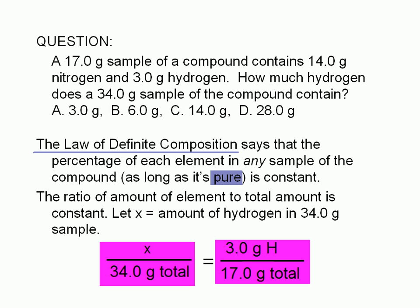To solve for X, we simply multiply both sides by 34.0-grams and get X equals 6.0-grams of hydrogen. The correct answer is then B.